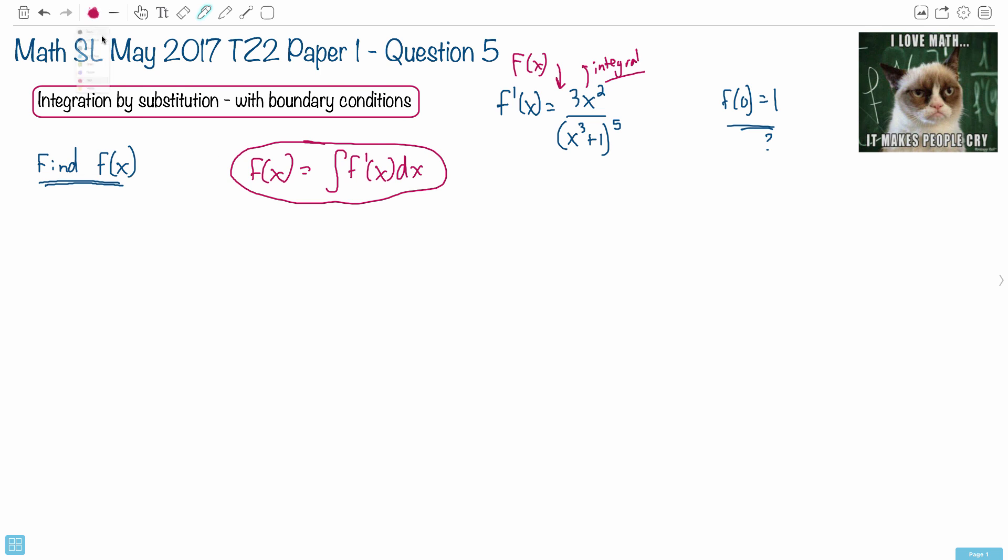So then, now we can start hunting for how to do the integral. So now we're going to do, all right, so f of x is going to equal the integral, or the anti-derivative, of this gross thing here. So we're going to put it down. So 3x squared over x cubed plus 1.